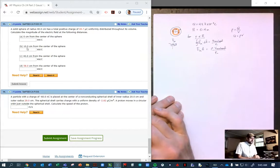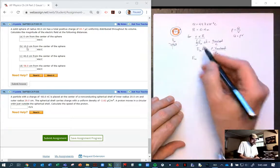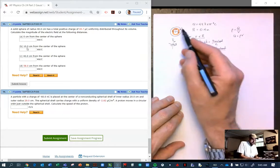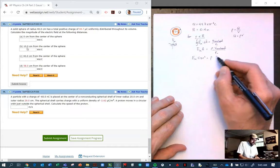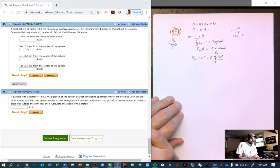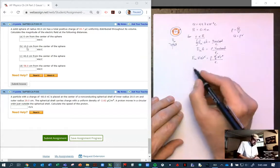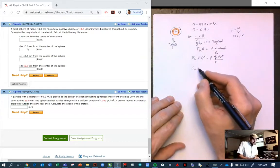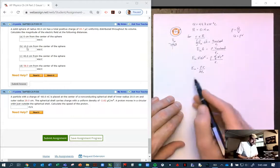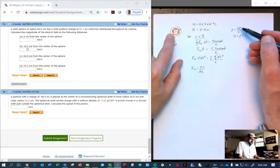And Q enclosed is simply rho times the volume enclosed. Don't forget your epsilon naught. The electric field on the inside times the area of the Gaussian, and the area of a sphere is 4 pi r squared, little r. And the volume of the enclosed Gaussian is 4 thirds pi little r cubed, and all of that is over epsilon naught.